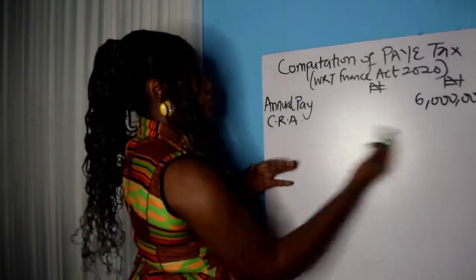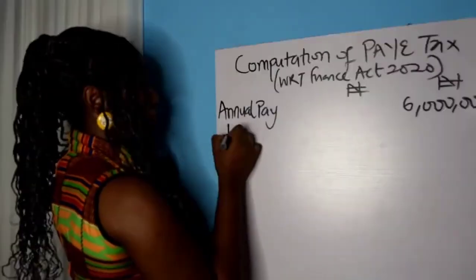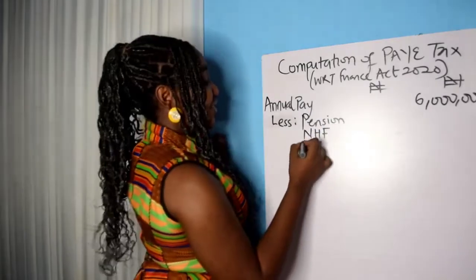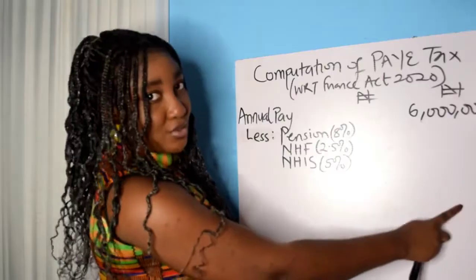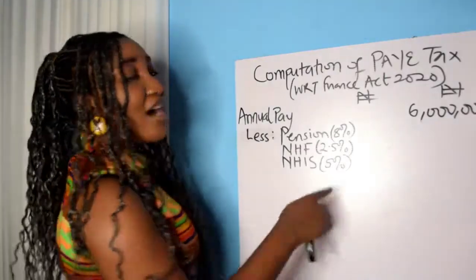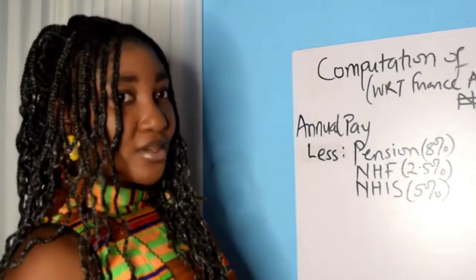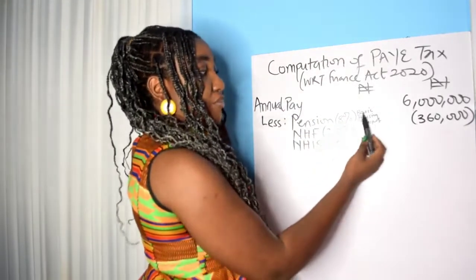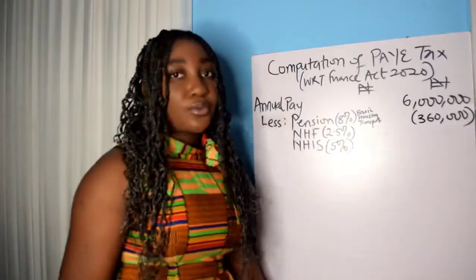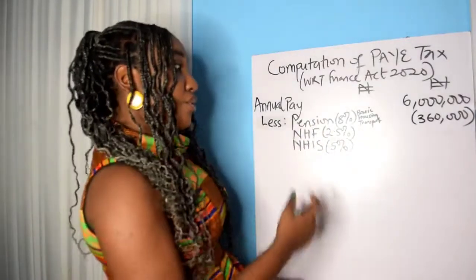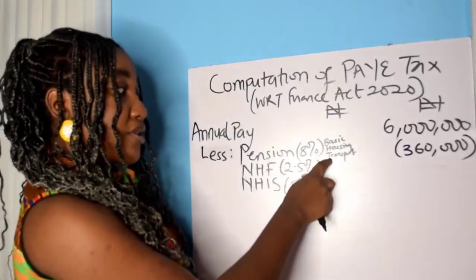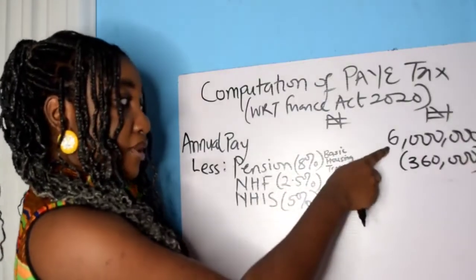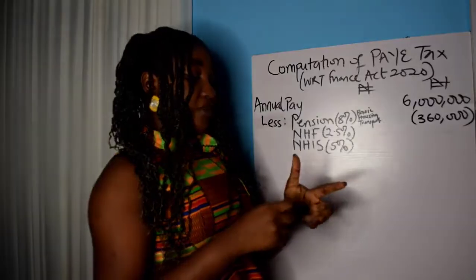So you're going to deduct pension, NHF (National Housing Fund), and NHIS (National Health Insurance Scheme) from the annual pay first. It is upon the reduced amount that you now get your consolidated relief allowance — so your CRA has effectively reduced, as we will now see. Pension is 8% of your basic, housing, and transport. Your company also contributes 8% of basic, housing, and transport. The Personal Income Tax Act says you should deduct this amount from the annual pay for the purpose of computing your consolidated relief allowance.